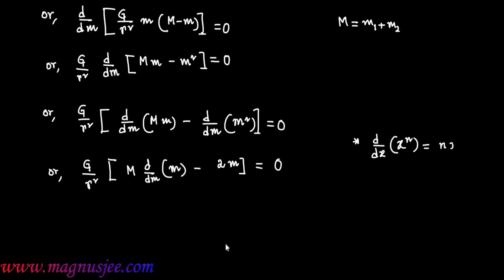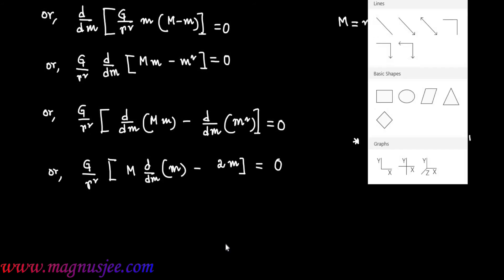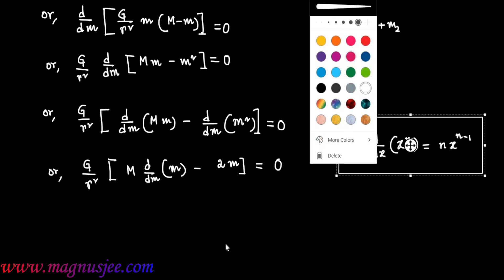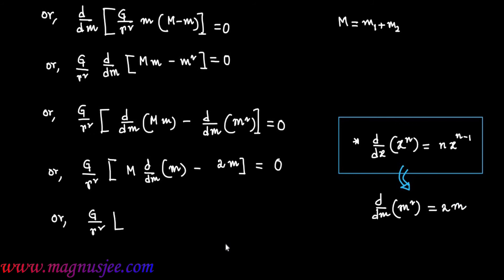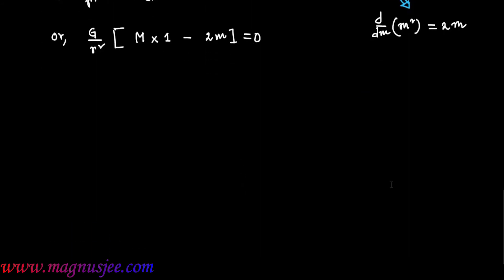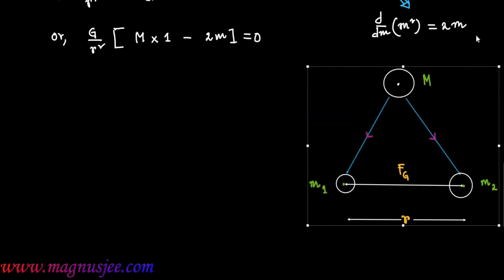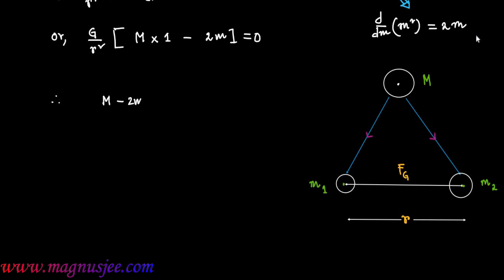Using the formula d/dx(xⁿ) = n·x^(n−1), we get d/dm(m²) = 2m. Therefore: G/r² · (M − 2m) = 0, which gives M − 2m = 0, so 2m = M, and therefore m = M/2.